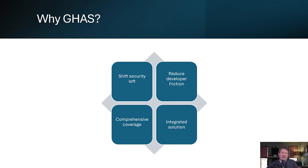So what's the real value proposition here? GHAS addresses three fundamental problems that every development team faces. First, it shifts security left in your development process — instead of finding vulnerabilities in production or during separate security reviews, you can catch them while you're actively writing code. Second, it reduces the friction typically associated with security tools, because everything is integrated into GitHub and developers don't need to learn new interfaces or interrupt their workflow. And third, it's comprehensive: you're not just getting one type of security scanning — you're covering code vulnerabilities, credential leaks, and supply chain risks all in one integrated solution.